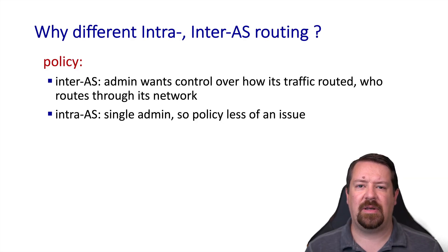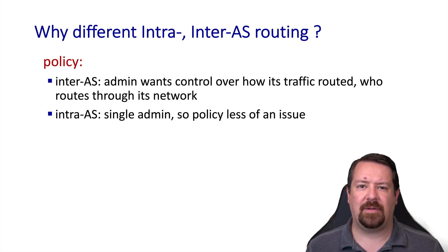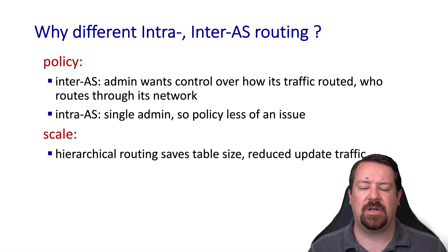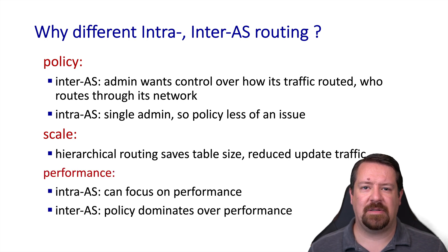The key difference between intra-AS routing and inter-AS routing is the focus on policy. Within an AS, the entity wants to achieve the best performance possible, and because one entity controls the whole network, it can focus on optimizing performance. With inter-AS routing, policy is at the forefront — determining where traffic goes when it leaves the network, what traffic is accepted into the network, and how it is routed through. Having separate inter- and intra-AS routing protocols supports a routing hierarchy where only information needed externally is propagated, reducing table size and update traffic while allowing the intra-AS protocol to focus on performance and the inter-AS protocol to focus on policy.